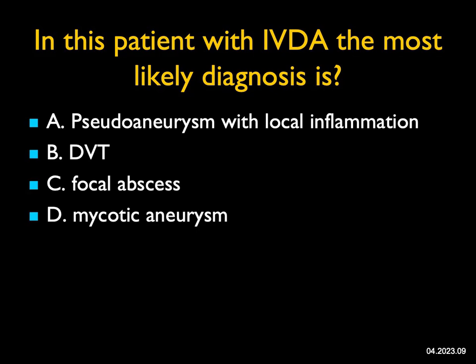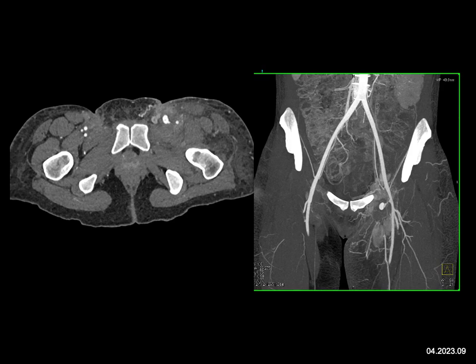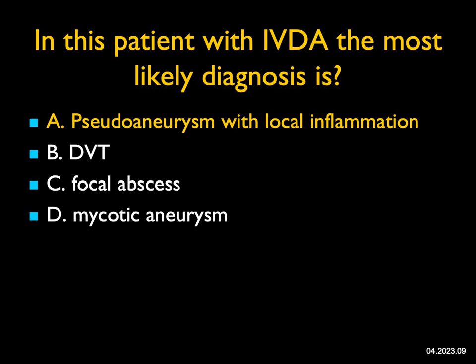In this patient with IV drug abuse, the most likely diagnosis — there's a lot of swelling in the left inguinal region. DVT can't be fully excluded but isn't clearly seen. A focal abscess is possible with local inflammation. Looking carefully at the MIP 3D, there's a connection to the vessel via a one centimeter pseudoaneurysm. The patient likely injected into the vein in this region — a great example of a pseudoaneurysm from IV drug abuse.